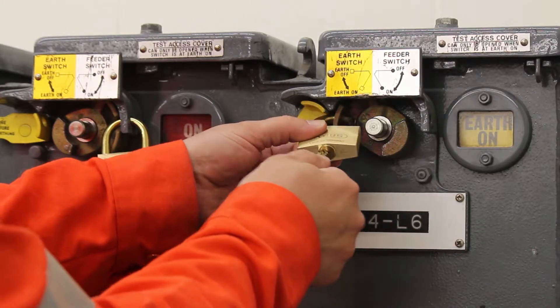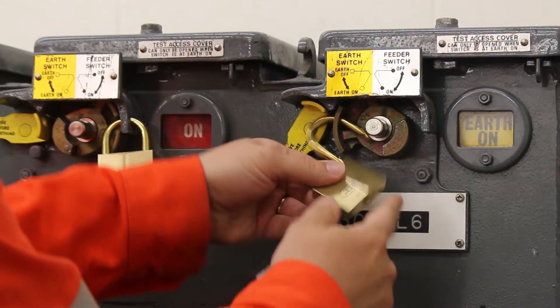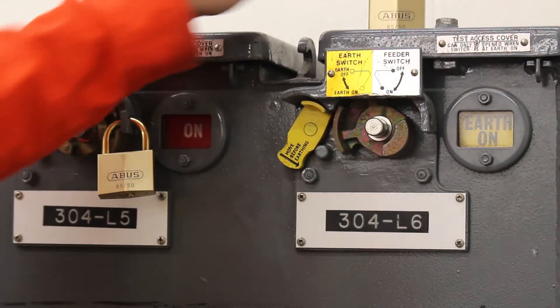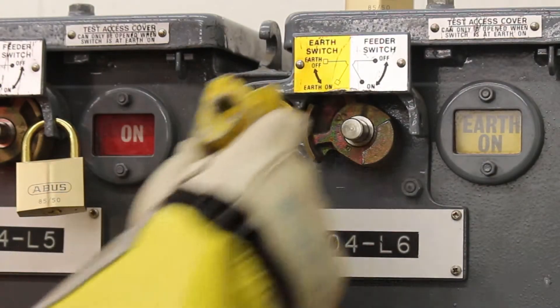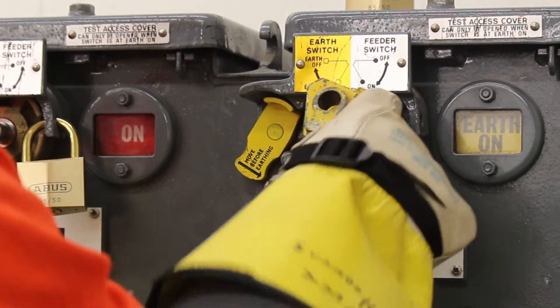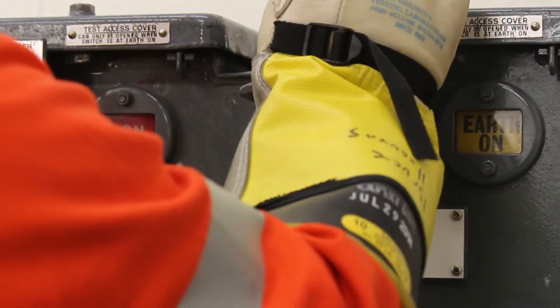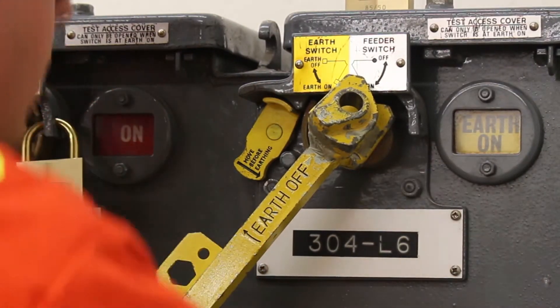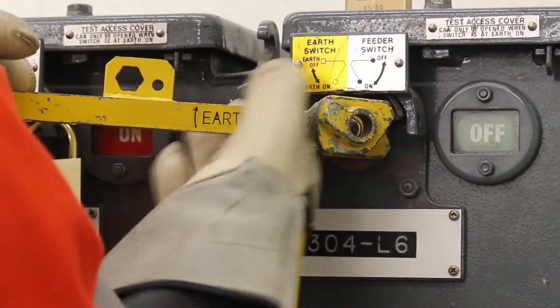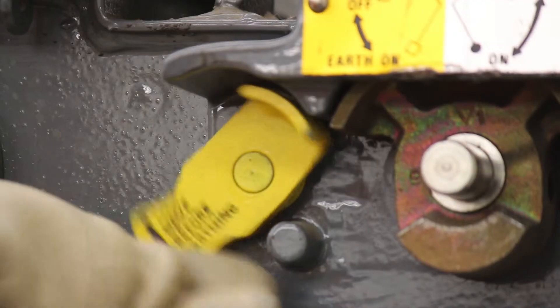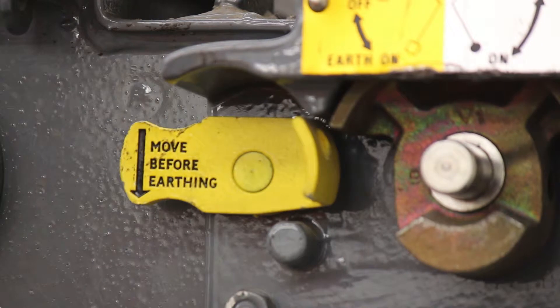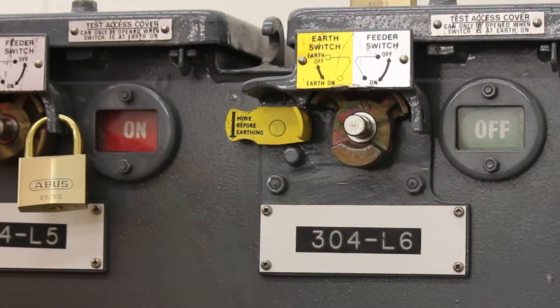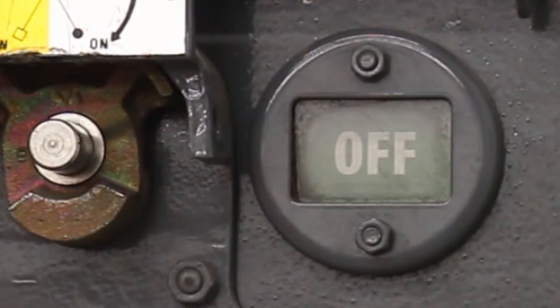Remove the lock on the switch you will be operating. Insert the earthing operating handle. Move the handle fully to the earth off position as indicated by a positive stop. Rotate the lever engraved 'move before earthing' clockwise to the stop. Verify the switch position as indicated in the sight glass.